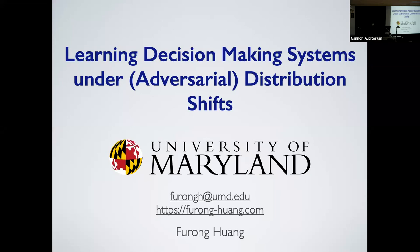Welcome, everybody. It's great to have you all here, and it's great to also have Professor Furong Huang giving a talk today. Furong is an assistant professor in our department. She works in machine learning, on the more mathematical aspects of machine learning and also applications. She works on reinforcement learning, on security, and many other things. In the past, she used to work a lot on tensor methods, but now she's broadened to many areas. So look forward to learning about her recent research.